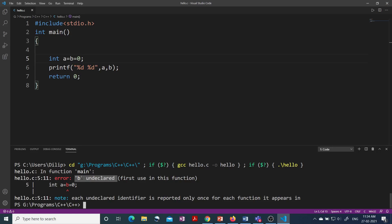And when do we get this error? We get this error when b is not associated with any data type. So compiler is saying that I do not know the data type of b.